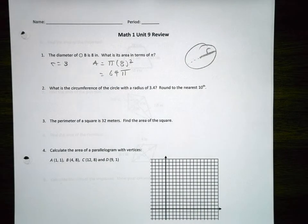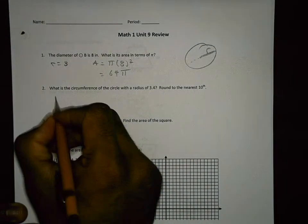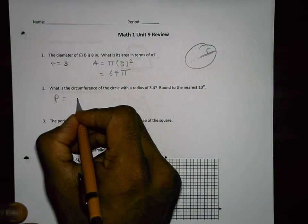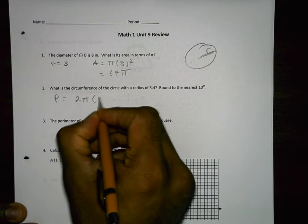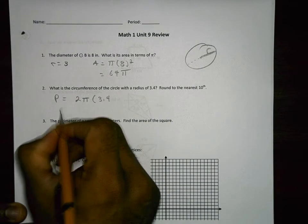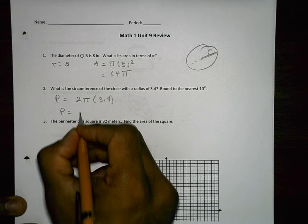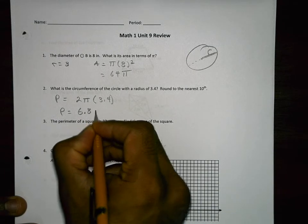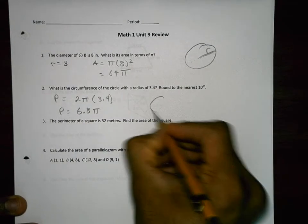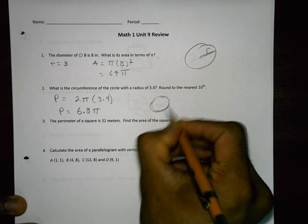What is the circumference of a circle with the radius 3.4, round to the nearest tenth? We plug that into the formula 2 pi R and then C equals 6.8 pi. That's circumference, the outside edge of the circle.